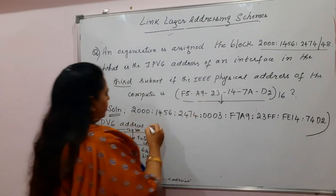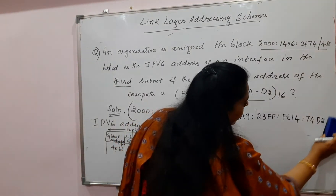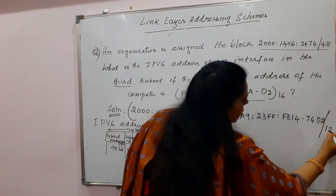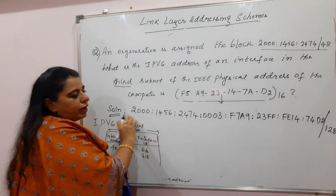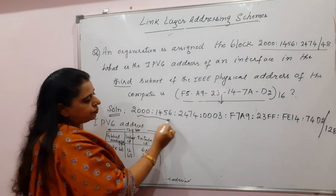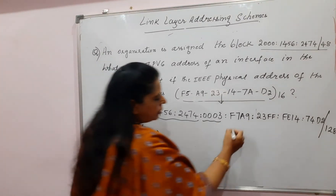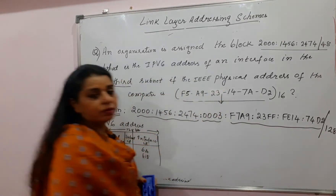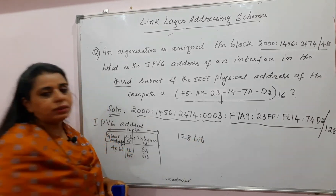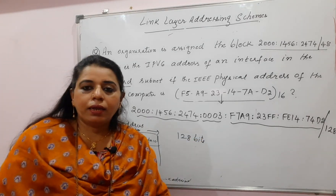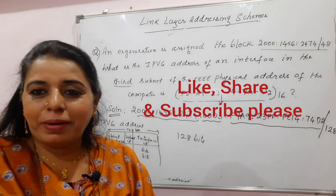This is your complete 128-bit IPv6 address. You can see: 48-bit global routing prefix, 16-bit subnet, 64-bit interface ID — total 128 bits. These kinds of numericals are quite simple; you can easily carry out and score marks. Hope the session is useful to you all. Thank you. Bye-bye. Take care.